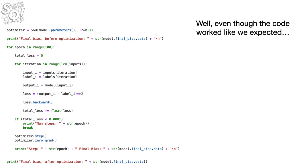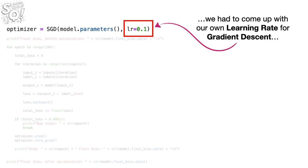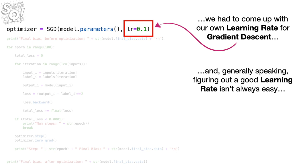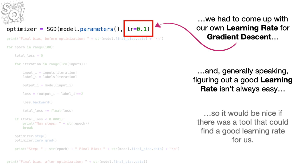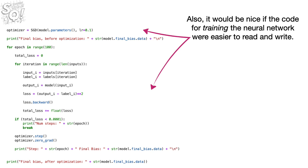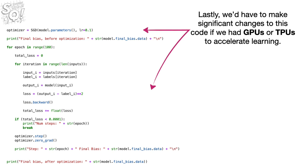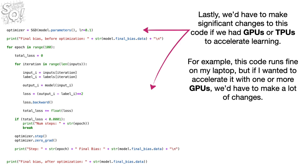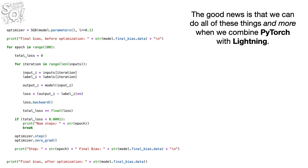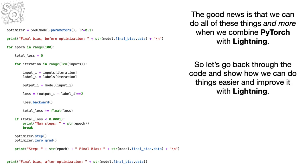Even though the code worked like we expected, we had to come up with our own learning rate for gradient descent. Generally speaking, figuring out a good learning rate isn't always easy, so it would be nice if there was a tool that could find a good learning rate for us. Also, it would be nice if the code for training the neural network were easier to read and write. Lastly, we'd have to make significant changes to this code if we had GPUs or TPUs to accelerate learning. The good news is that we can do all of these things and more when we combine PyTorch with Lightning. So let's go back through the code and show how we can improve it with Lightning.